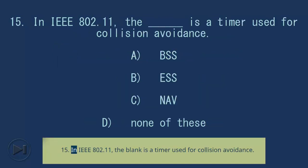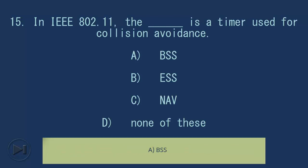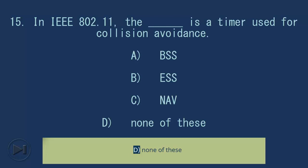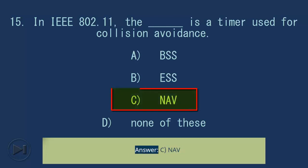Question 15: In IEEE 802.11, the blank is a timer used for collision avoidance. A. BSS, B. S, C. NAV, D. None of these. Answer: C. NAV.